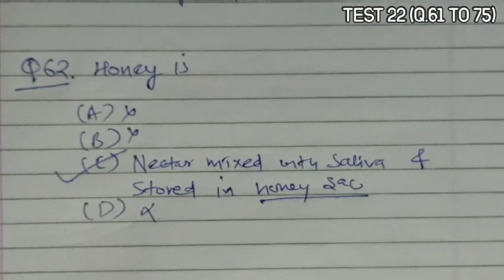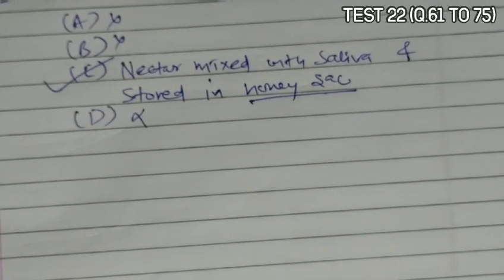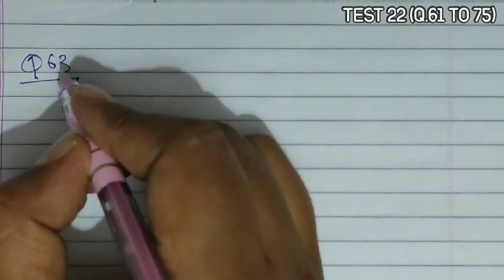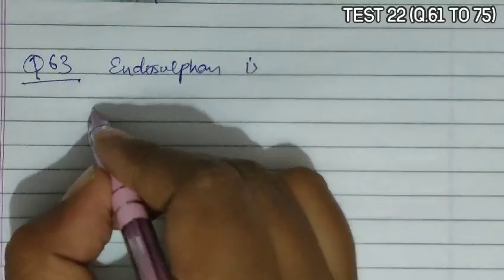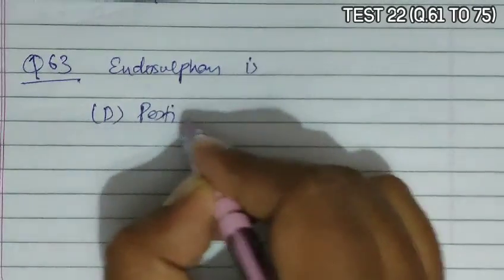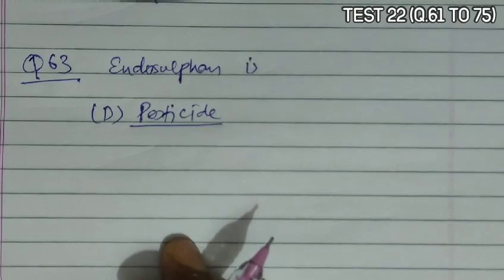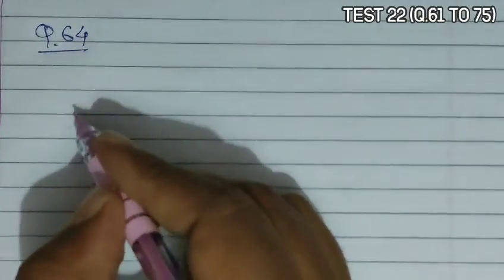Option D says nectar and water sucked by the honeybee — water is not a particular component, so that is incorrect. Question 63 asks that endosulphane is a type of pesticide, so option D is correct.